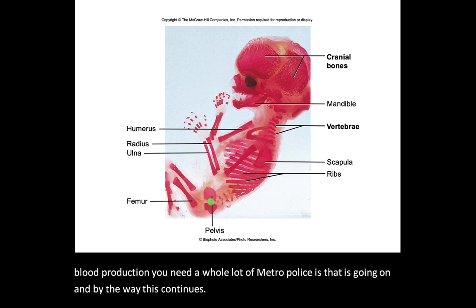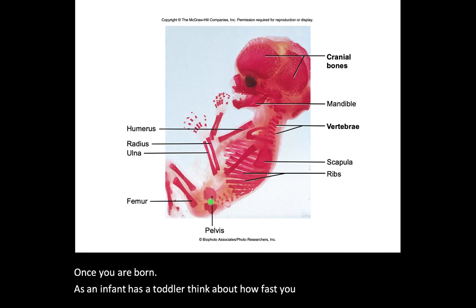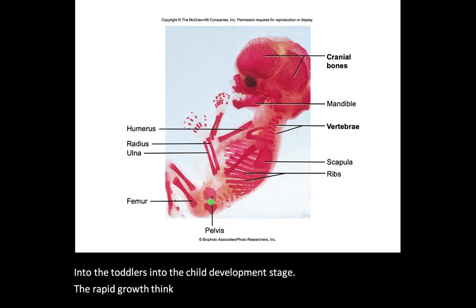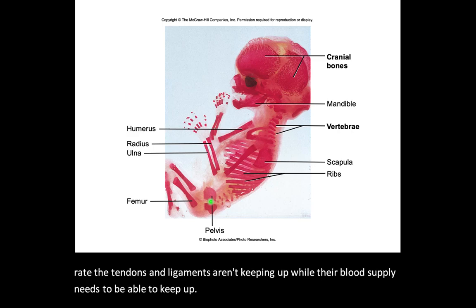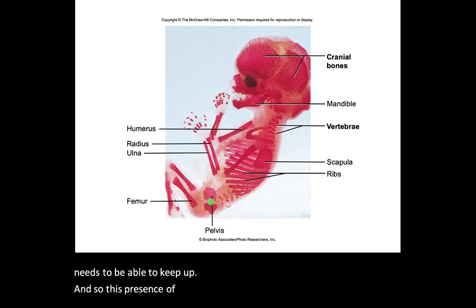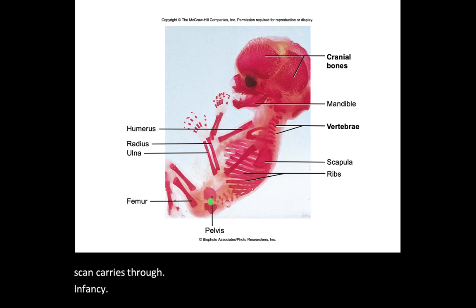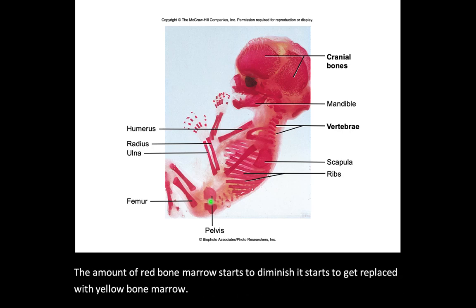As an infant, toddler, and into the child development stage of rapid growth — think about growing pains as a teenager. It's because the person is growing, getting taller at such a fast rate that tendons and ligaments aren't keeping up, and their blood supply needs to keep up as well. So this presence of red bone marrow carries through infancy, toddler, child, and adolescence. The amount of red bone marrow starts to diminish and gets replaced with yellow bone marrow as we get closer to our twenties.